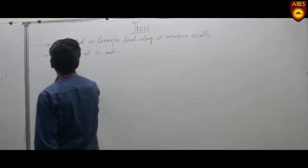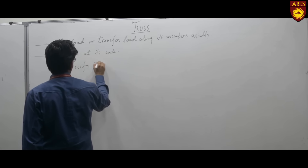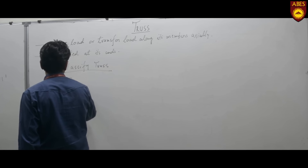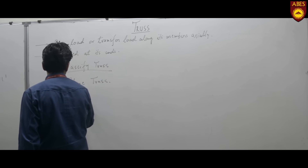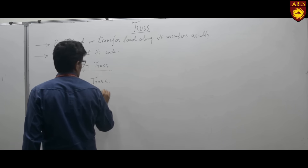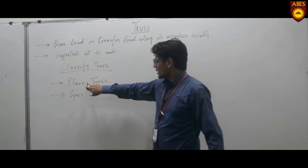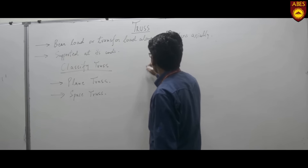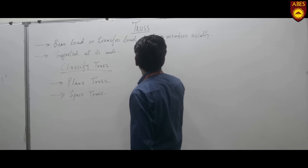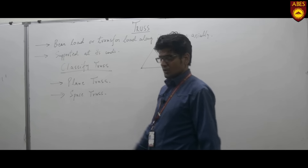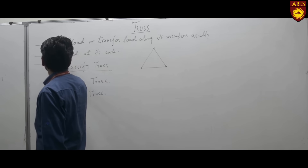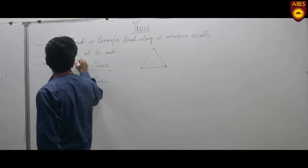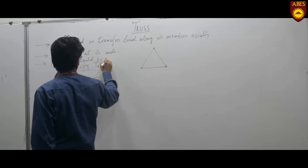We can classify trusses into two different types: number one is plane trusses, and the second one is space trusses. A plane truss is a simple form of a truss, and the simplest form of a plane truss is a triangle composed of three straight members. The third characteristic of the truss is that members should be straight.